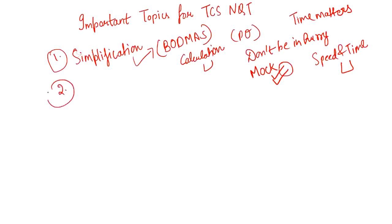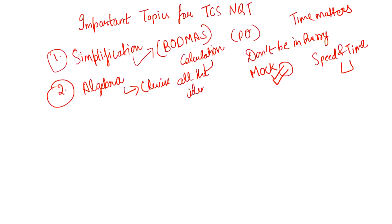The next topic from which you will definitely get most questions is Algebra. Even in the October and February exams, students told that mostly questions were from algebra. For the algebra part, you have to revise all the identities — we've been learning these identities since childhood. Just revise all the identities and solve some questions based on them so that you are aware of the pattern.